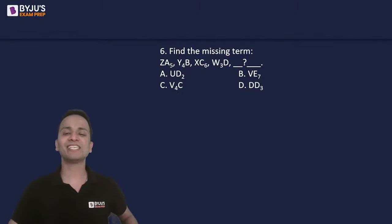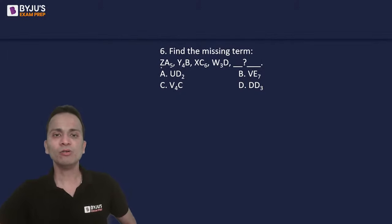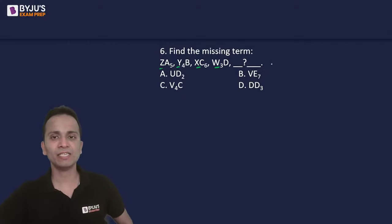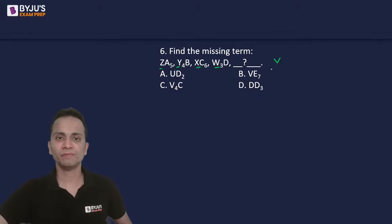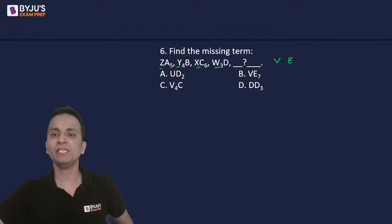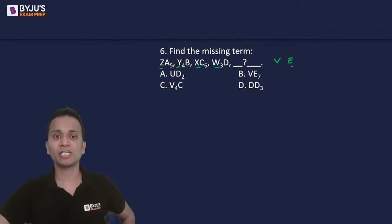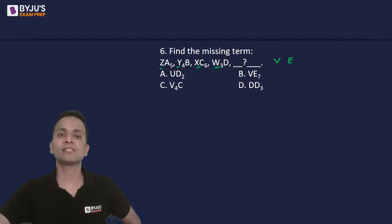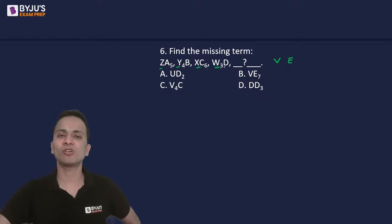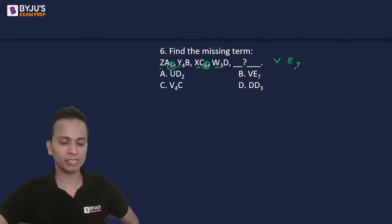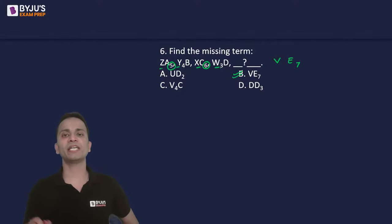Question number 6: find the missing term. Z, Y, X, W — these are reverse alphabets, so the next first letter is V. For the second position: A, B, C, D — the next alphabet is E. For the third position: numbers 5, 4, 6, 3 alternate — looking at the pattern more carefully, the numbers are 5, 4, 6, 3, so next would be 7. The correct answer is V, E, 7.